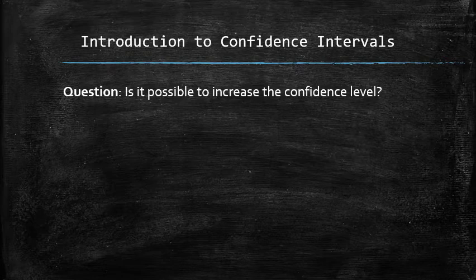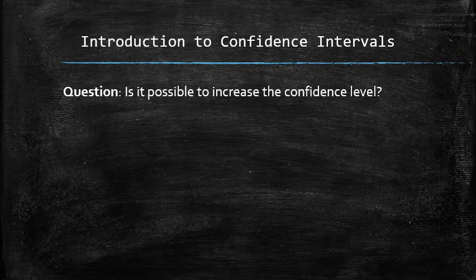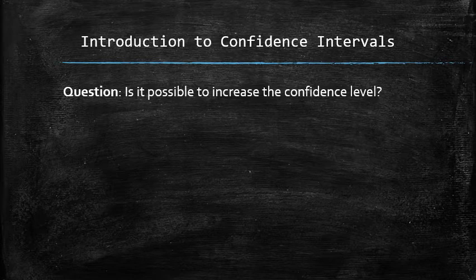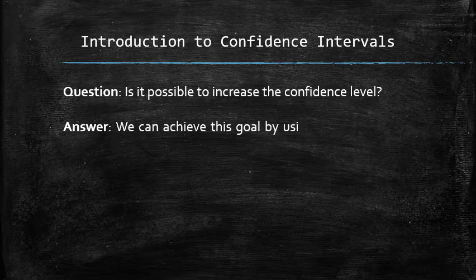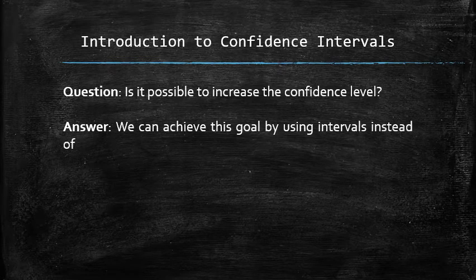This is an example of an interval estimate of our arrival time. Notice that the chances of our estimate being correct are now significantly higher than zero. In other words, with a positive confidence, we estimate our arrival time to be between 5 and 15 minutes. In general, we can increase the confidence level by using intervals instead of a single number.